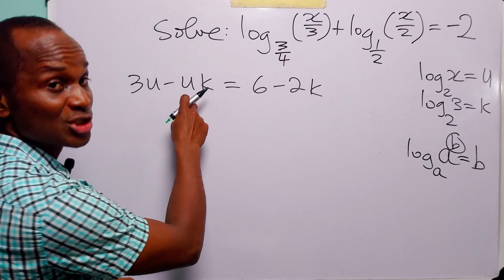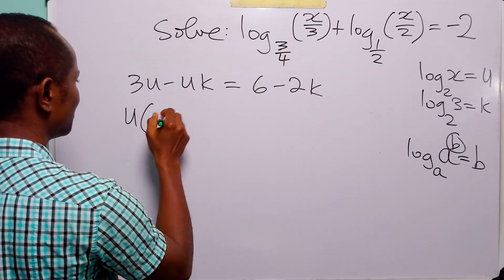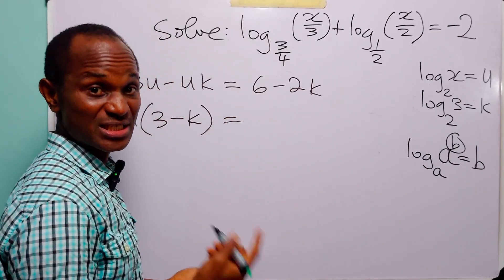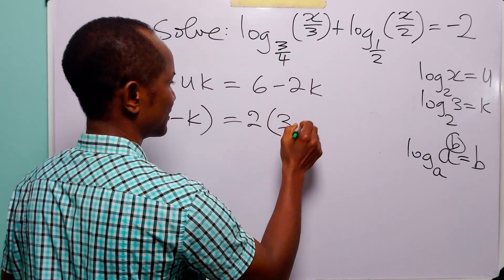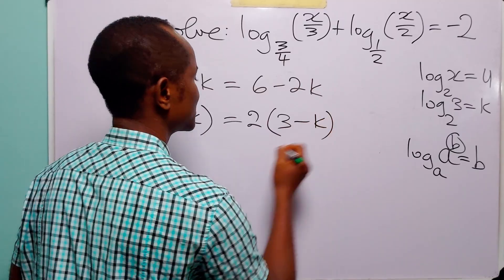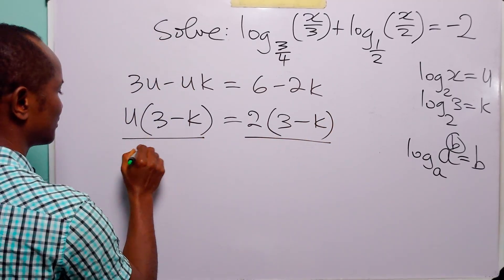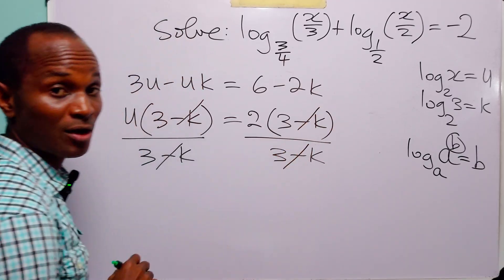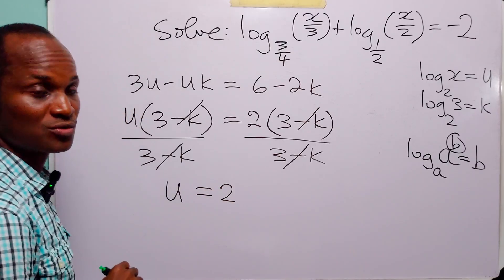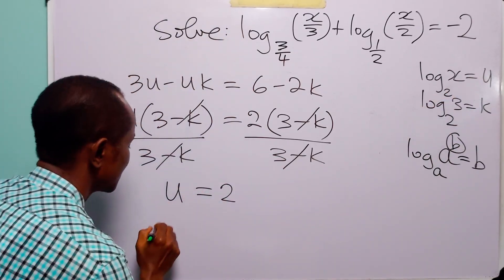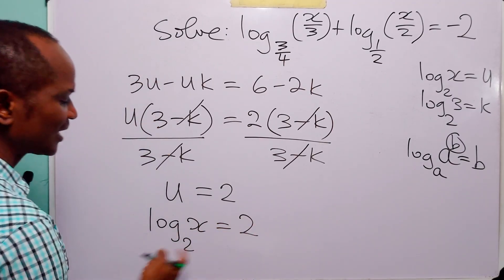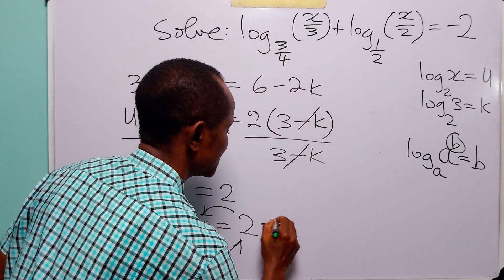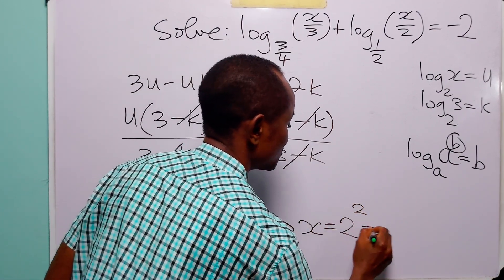We have a common factor of u on the left, so factoring gives u times (3 minus k). On the right, we have a common factor of 2, giving 2 times (3 minus k). Dividing both sides by (3 minus k) leaves us with u equals 2. But remember that u equals log base 2 of x, and when log base 2 of x equals 2, that means 2 to the power 2 equals x. So x equals 2 squared, which equals 4.